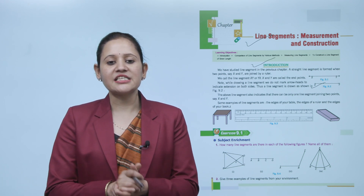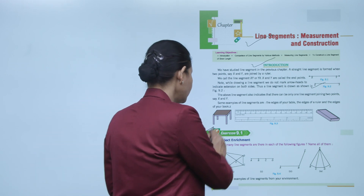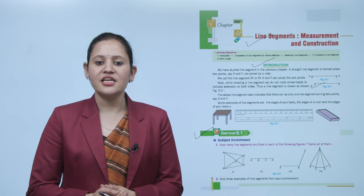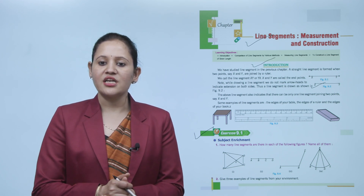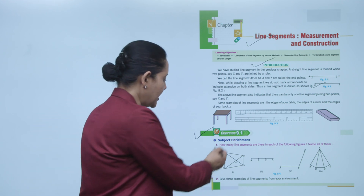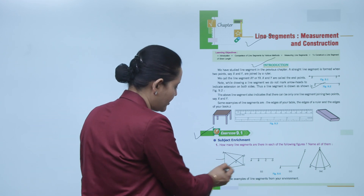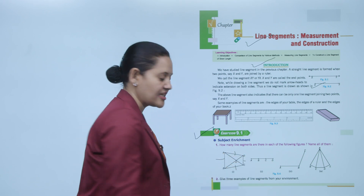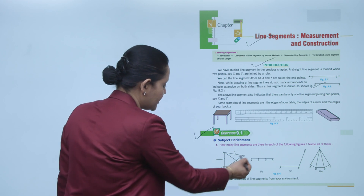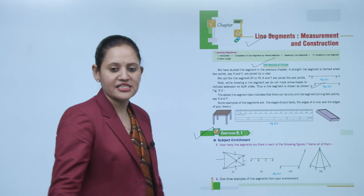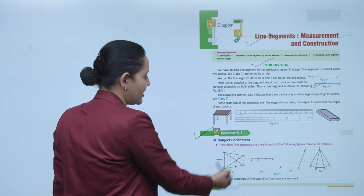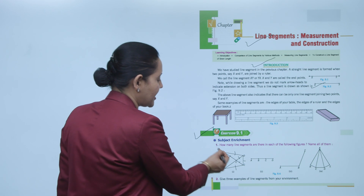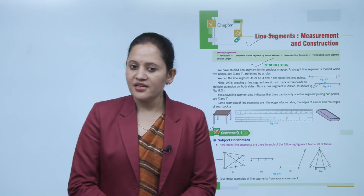Exercise 9.1: how many line segments are there in each of the following figures? Name them. The line segments are: AB, BC, DC, AD, DE, DB, BE, AE, EC, and AC.